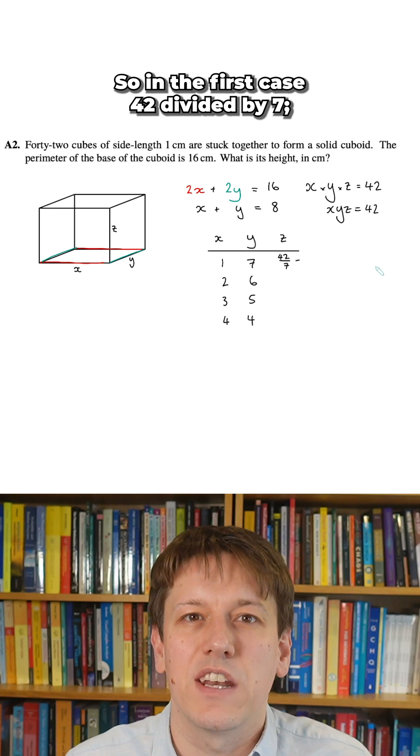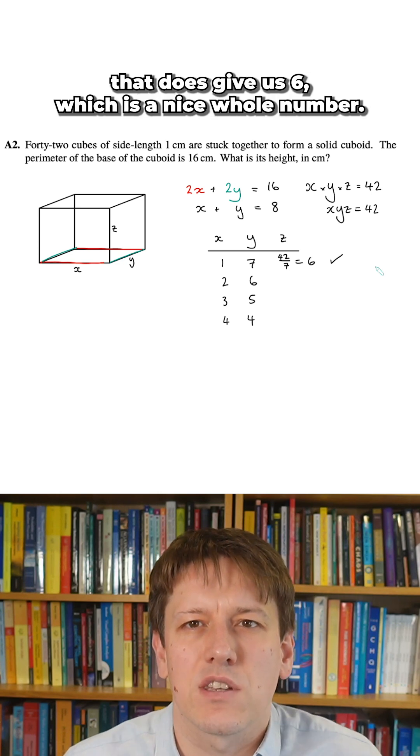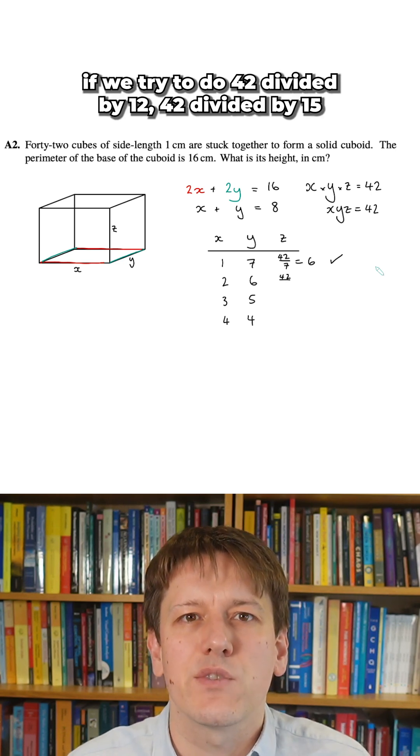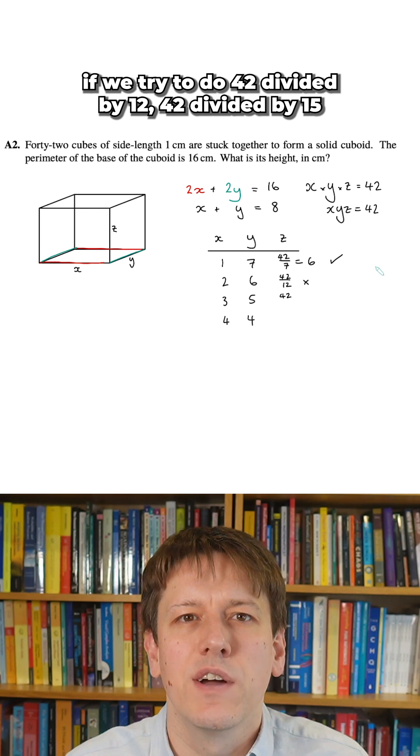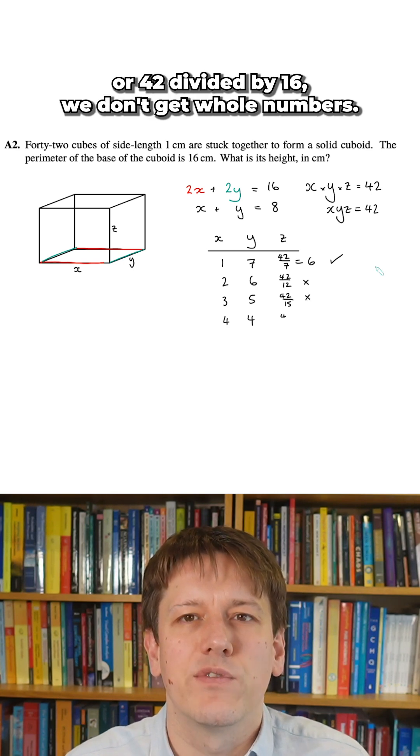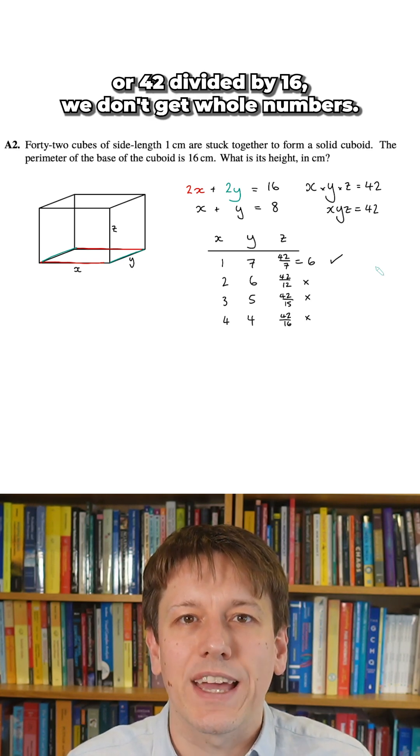So in the first case, 42 divided by 7, that does give us 6, which is a nice whole number. But for the others, if we try to do 42 divided by 12, 42 divided by 15, or 42 divided by 16, we don't get whole numbers.